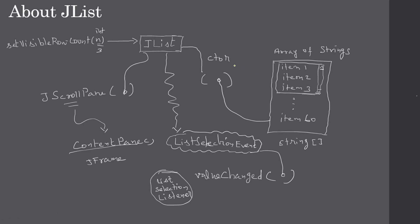Here is the sequence for our example: first we will prepare an array of strings, then construct the JList by supplying this array. After that we create a JScrollPane and supply the JList to it, then give that to the content pane. This is enough to display the JList. To handle the event, we will override the ListSelectionListener for this JList and write our code for how we handle the value change.